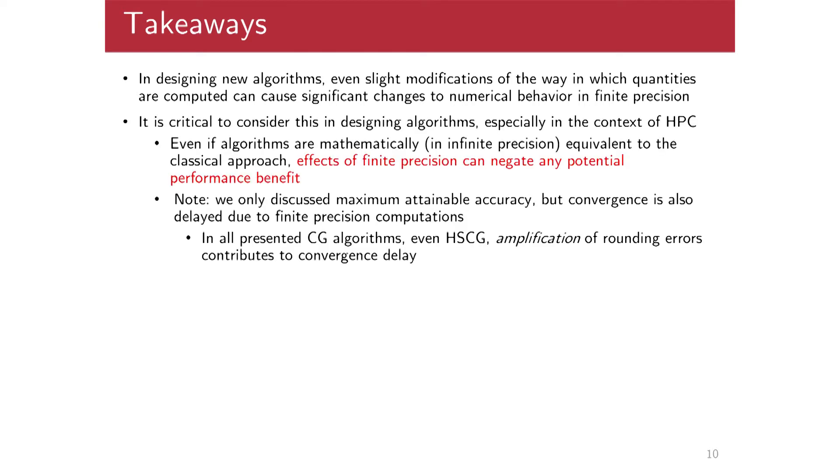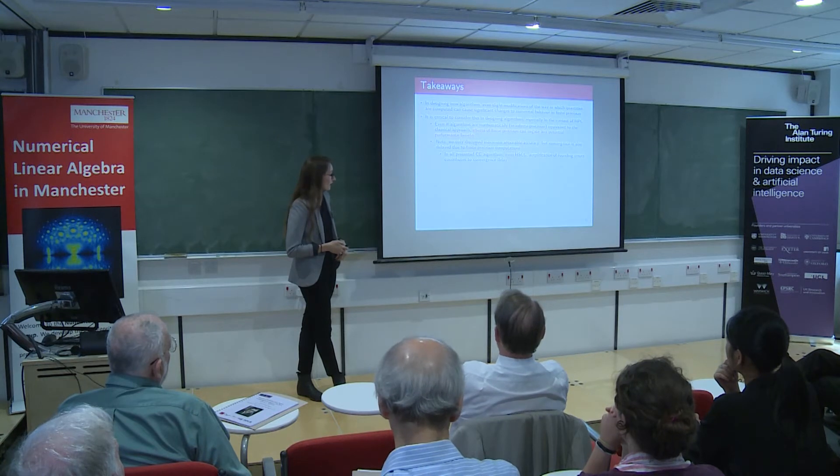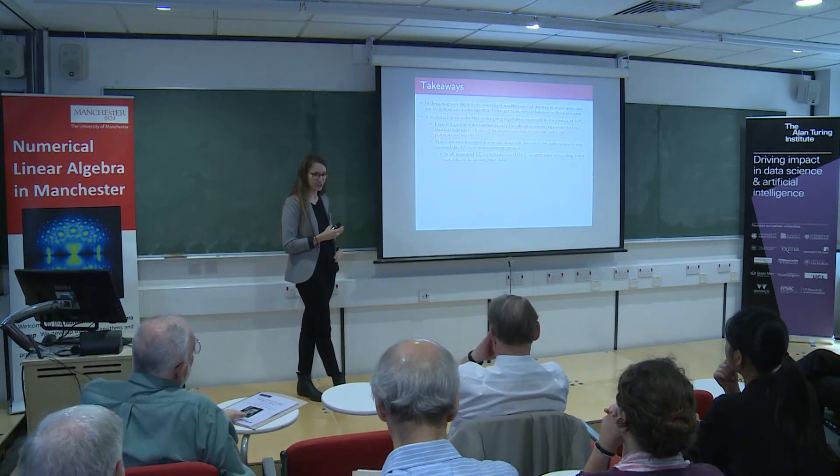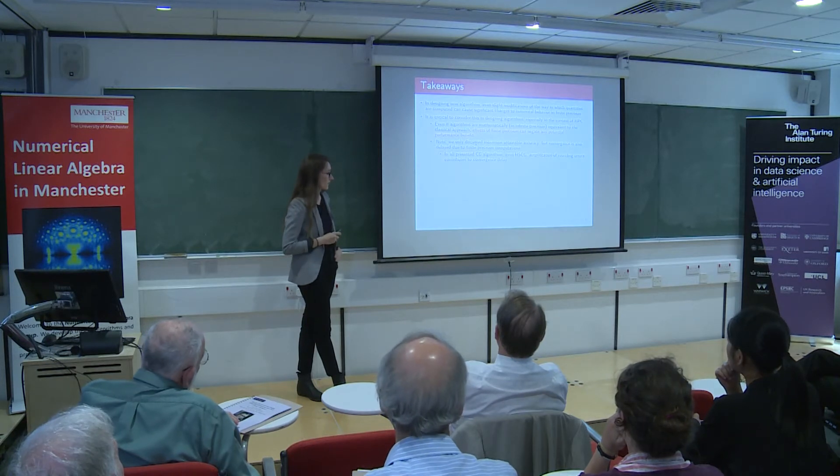OK. And so in the context of HPC, this is particularly important to pay attention to how any changes we make to speed things up might actually have an effect on the finite precision behavior. Right. And so we have to be careful because in this case, the effects of the finite precision behavior can really negate any potential performance benefit. We might have our convergence might be significantly delayed so we don't actually save anything. And we might not be able to attain the accuracy required by whatever application we're running at the higher level. OK. And I'll also just mention that I only talked about attainable accuracy, but of course, and especially for optimizing high performance computations, the convergence rate is also very important. But this is a kind of something that's kind of harder to talk about. And this is something that for all these CG methods suffers from amplification of rounding errors.